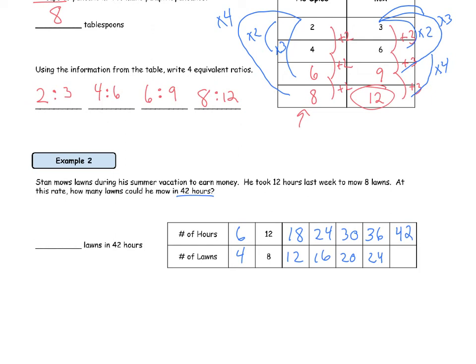At 36 hours we have 24 lawns. Let's add 6 more hours to get to 42 and add 4 more lawns to get to 28. Did you see the multiplication relationship between 6 hours and 42 hours, and 4 lawns and 28 lawns? Six times 7 is 42, and 4 times 7 is 28. So Stan can mow 28 lawns in 42 hours. In this case we made a total of seven equivalent ratios, starting at 6 to 4 and ending at 42 to 28.